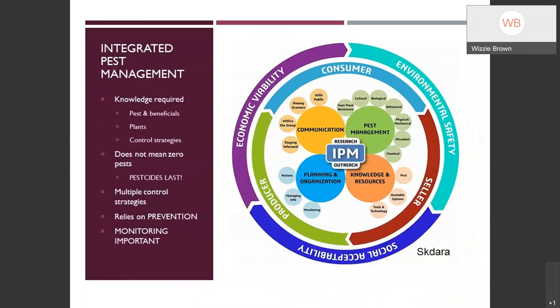IPM does not mean that you are going to have zero pests in the landscape — there's always going to be some level of insects, whether those are pests or not. One of the strategies is having and conserving beneficial organisms in the landscape that help control those pests. If you don't have the food for them to eat, meaning some pests, then you're not going to get those beneficials.